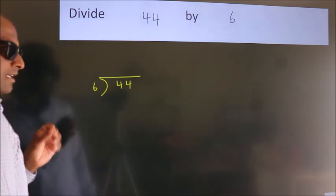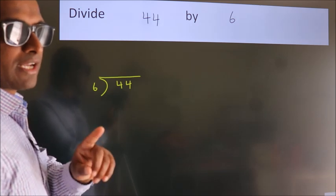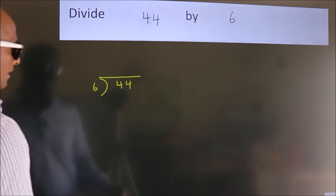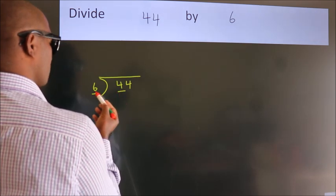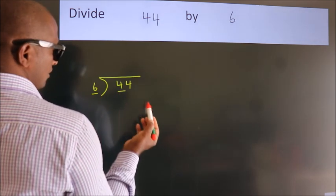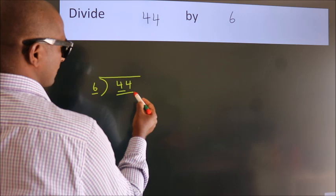This is step 1. Next, here we have 4. Here 6. 4 is smaller than 6. So we should take 2 numbers: 44.